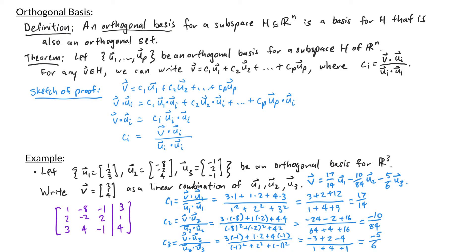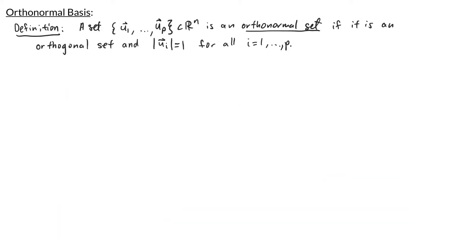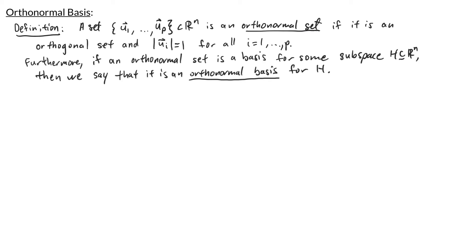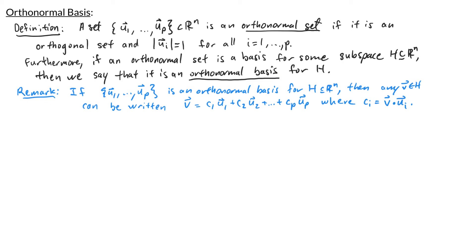Things get even simpler with an orthonormal basis. A set of vectors u1 through up is an orthonormal set if it's orthogonal and each vector has norm 1. If an orthonormal set is also a basis for a subspace, we call it an orthonormal basis. For an orthonormal basis, the weight simplifies to ci = v·ui, because ui·ui = ||ui||² = 1² = 1, so the denominator disappears.